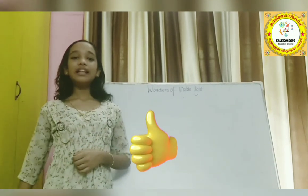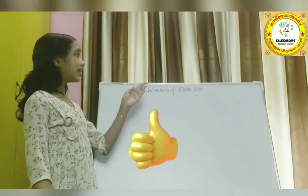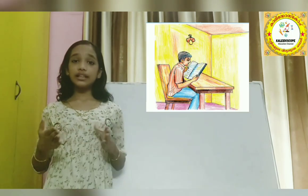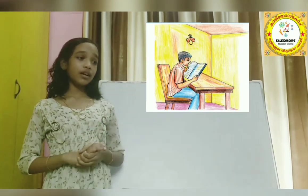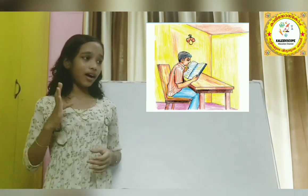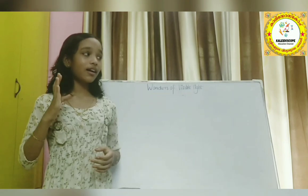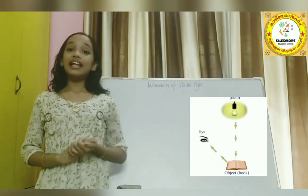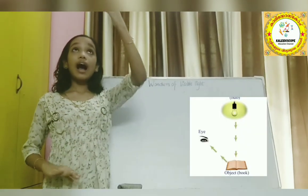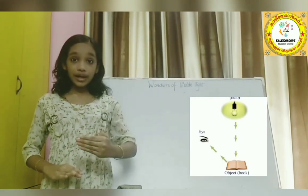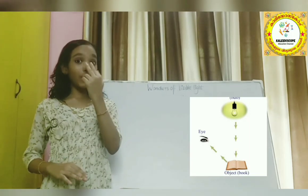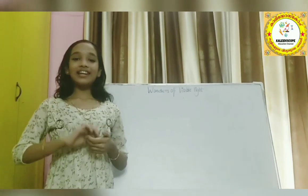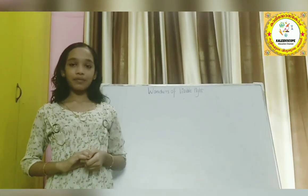Good job! Look at this figure. How did the boy see the book? The light falling on the book gets reflected into the boy's eyes. Then he can see the book.